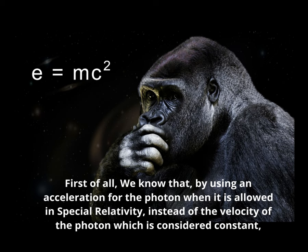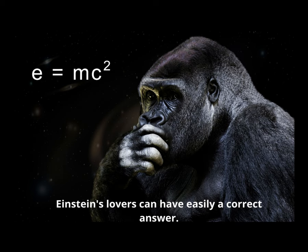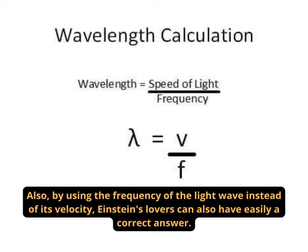First of all, we know that by using an acceleration for the photon when it is allowed in special relativity, instead of the velocity of the photon which is considered constant, Einstein's lovers can have easily a correct answer. Also, by using the frequency of the light wave instead of its velocity, Einstein's lovers can also have easily a correct answer.